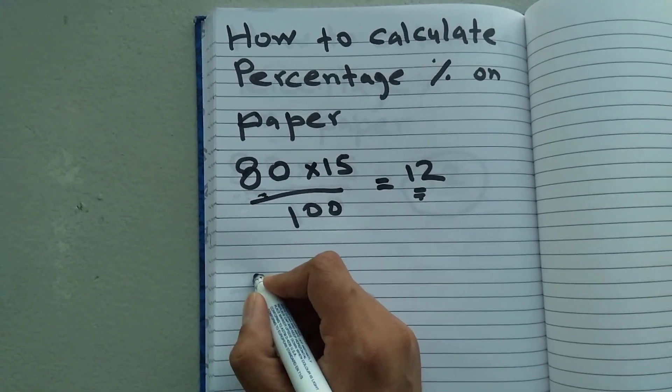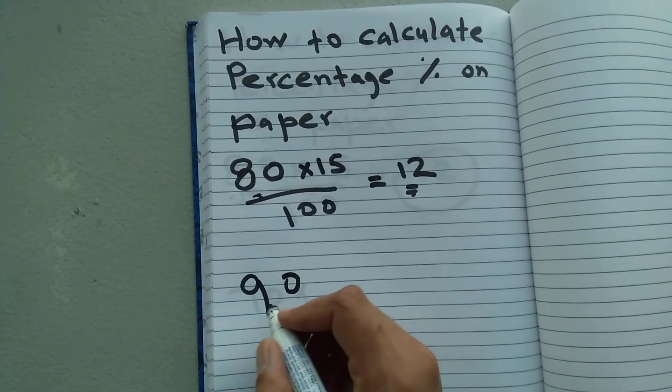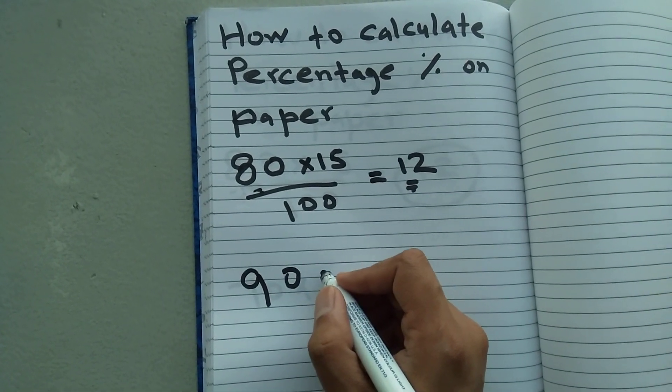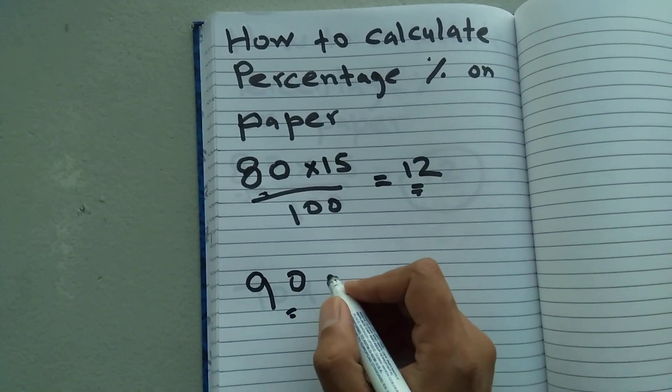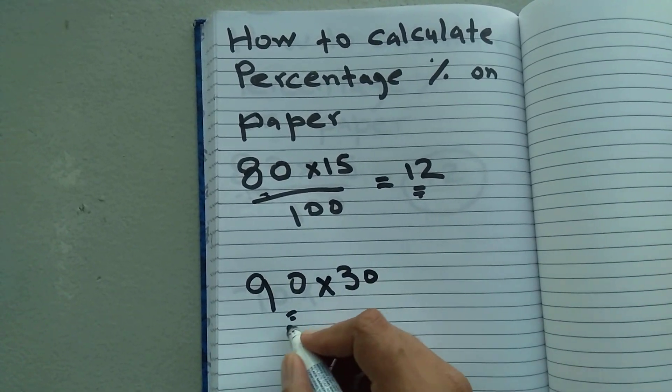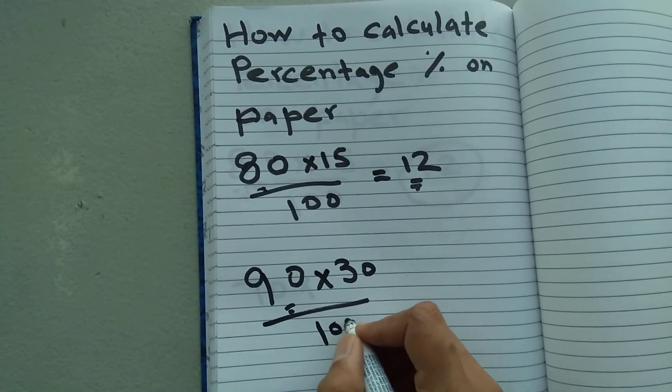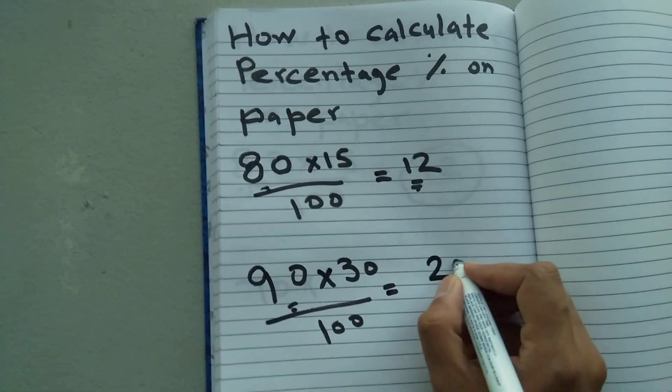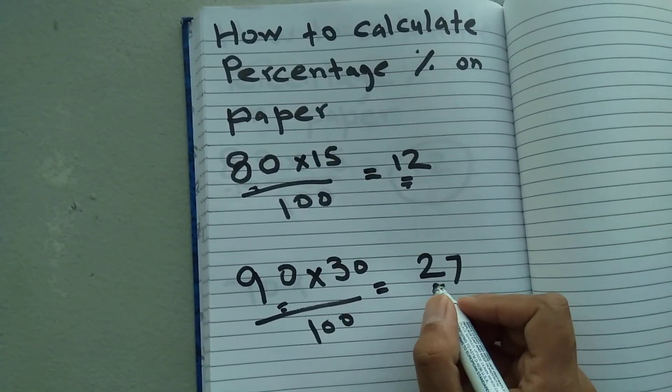For example, let's say you have a value of 90, and you want to calculate how much will be the 30% of this value. You have to multiply it with 30, and then you have to divide it with 100.